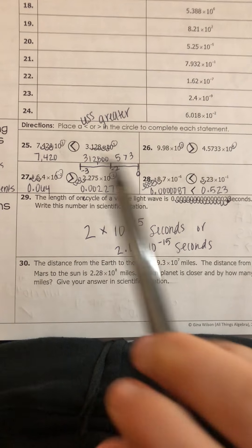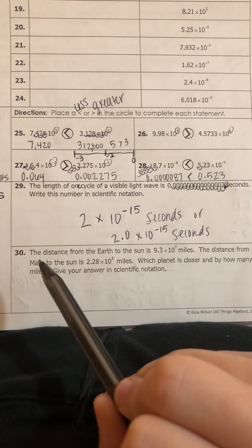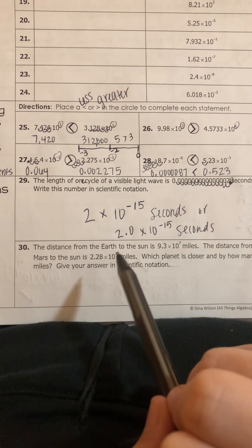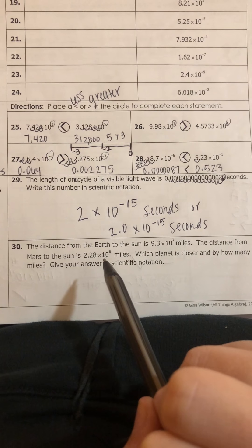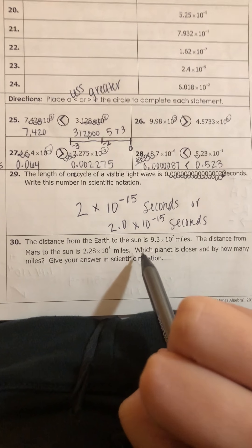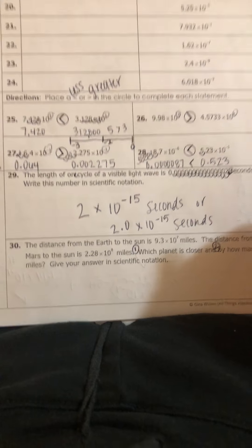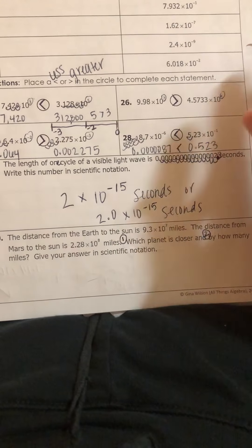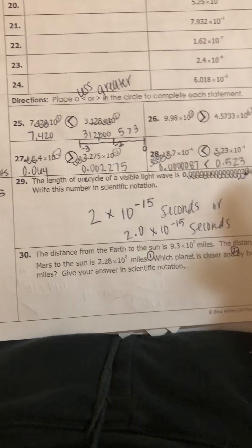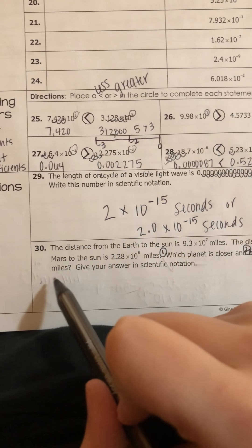Alright, last one. The distance from the Earth to the Sun is 9.3 times 10 to the 7th miles. The distance from Mars to the Sun is a little bit further, 2.28 times, oh shoot, I just gave it away, 2.28 times 10 to the 8th miles. First question is, which planet is closer? So that's part one. And the second says, by how many miles is it closer? And you have to give that answer in scientific notation. So I already told you, or if you know anything about our solar system, you would know that Earth is closer to the Sun than Mars because it goes Sun, Mercury, Venus...